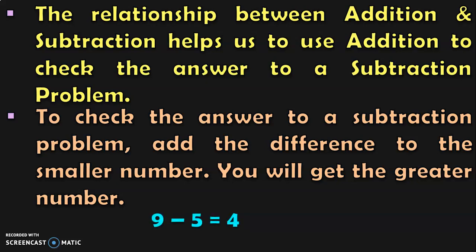9 minus 5 is equal to 4. Here, 4 is the difference between 9 and 5. Which is the smaller number in 9 and 5? It is 5. So when we add this difference to the smaller number 5, you will get the greater number 9. Let us do this with 4-digit numbers and understand the concept better.